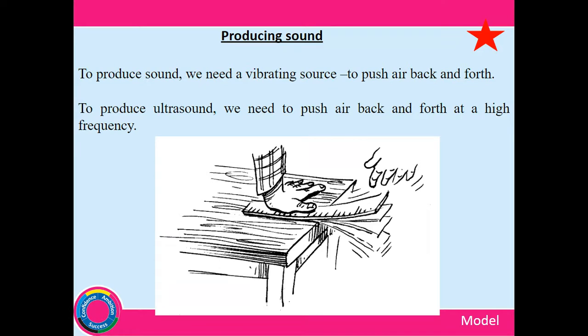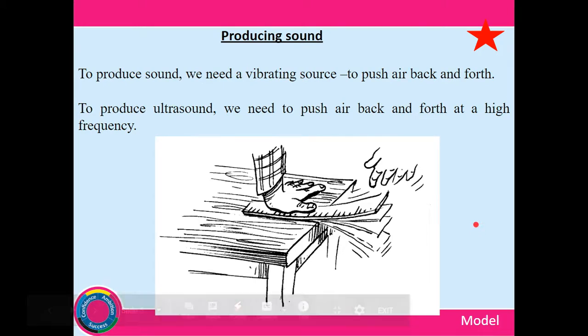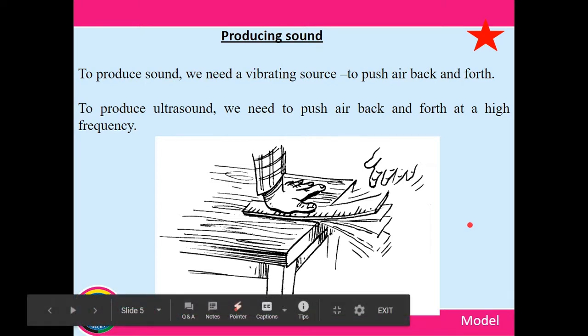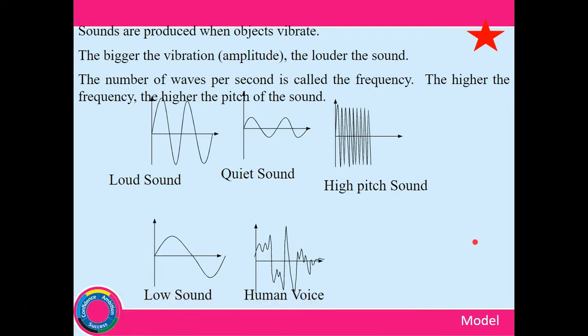To produce ultrasound, we need to push the air backwards and forwards at a higher frequency. In fact, what we need to do is we need to push the air backwards and forwards at 20,000 Hertz. And this is the limit of human hearing. It's the limit of most human hearing. There are some people who can hear slightly higher than 20,000 Hertz. Some children and some females also can hear above 20,000 Hertz.